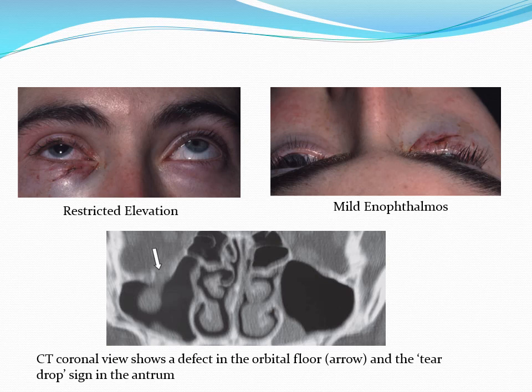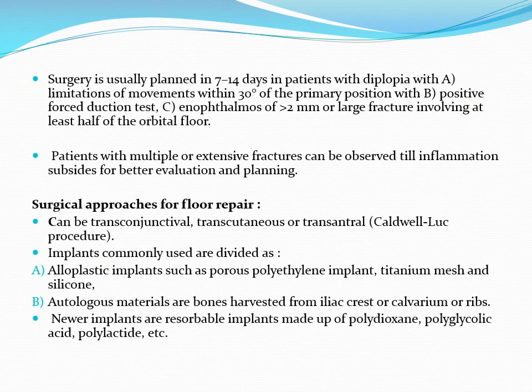The images show restricted elevation due to blowout fracture, enophthalmos in the next figure, and the CT picture, which is very classic and described as the tear-drop sign seen with blowout fracture. For surgical approaches, you need not go into the details — just the principle of the surgery.